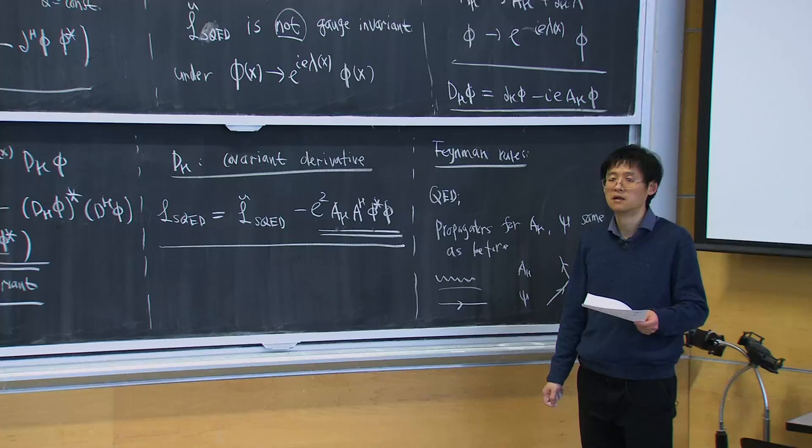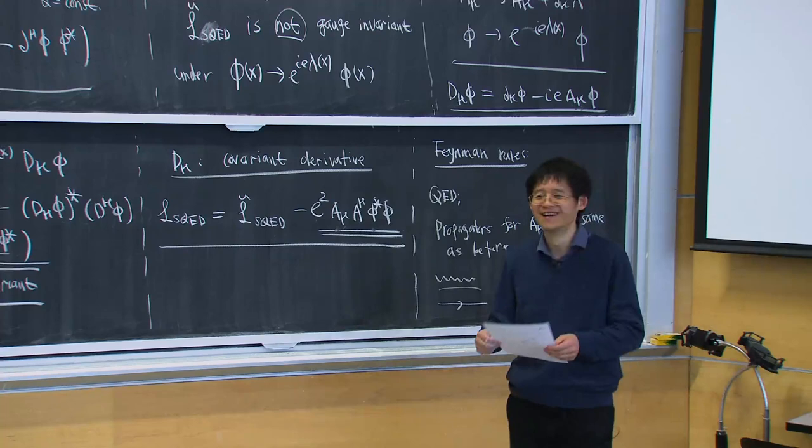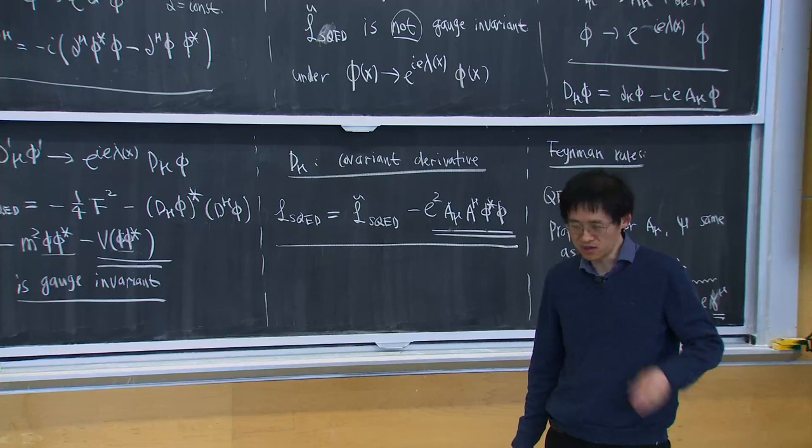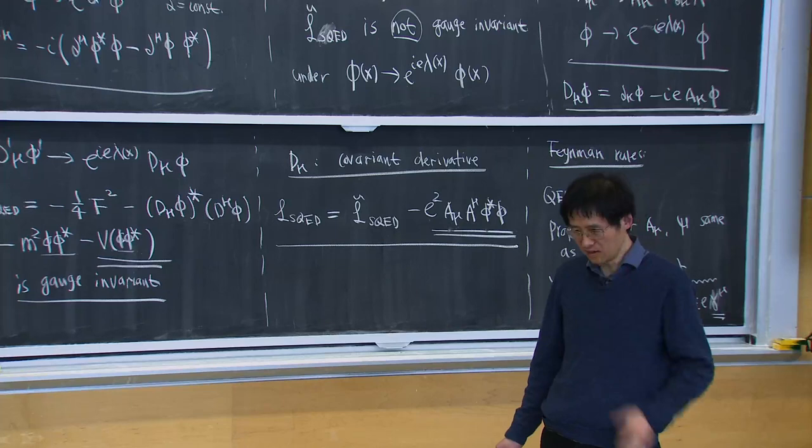Student: Is it possible to add a mass term to the photon? Instructor: No, you cannot — it violates the gauge symmetry. The gauge symmetry is what ensures the photon is massless. That is why this is something we do not want to break.